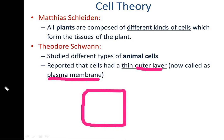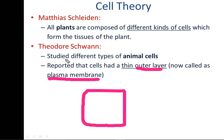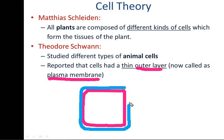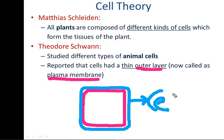Once the electron microscope was invented, we went through the details of this structure. Schwann proposed this as a thin outer layer for animal cells. He also noted that in plant cells, this same structure has two coverings — the outermost layer of the plant cell he referred to as the cell wall, which is a dead part of the cell, not a living substance.